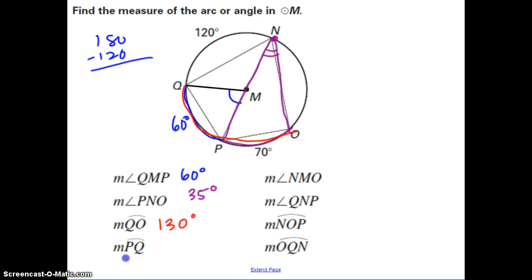Finally, the measure of arc PQ. We actually found this earlier when solving for angle QMP: arc PQ is 60 degrees.